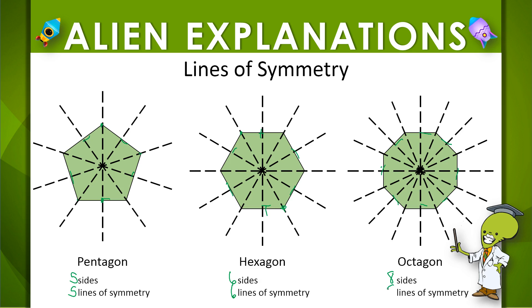So in a regular polygon, if you want to know the number of lines of symmetry, you just need to know the number of sides.